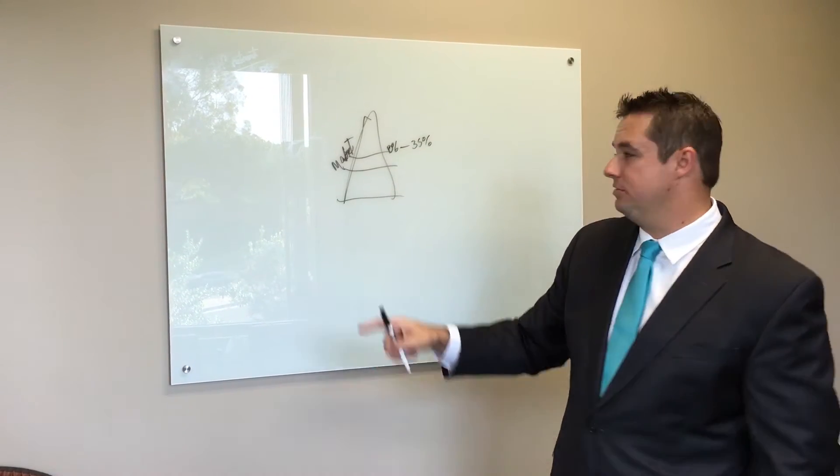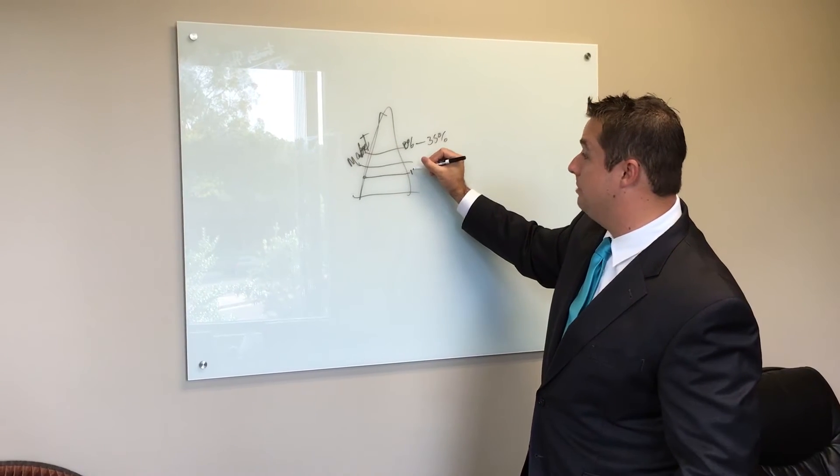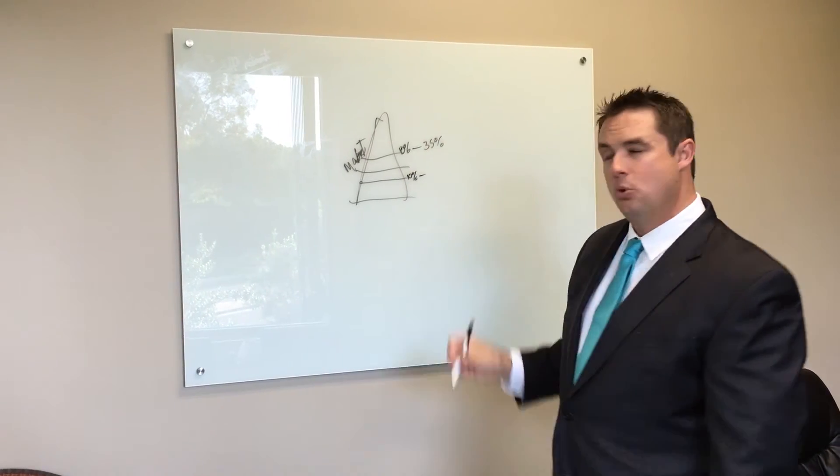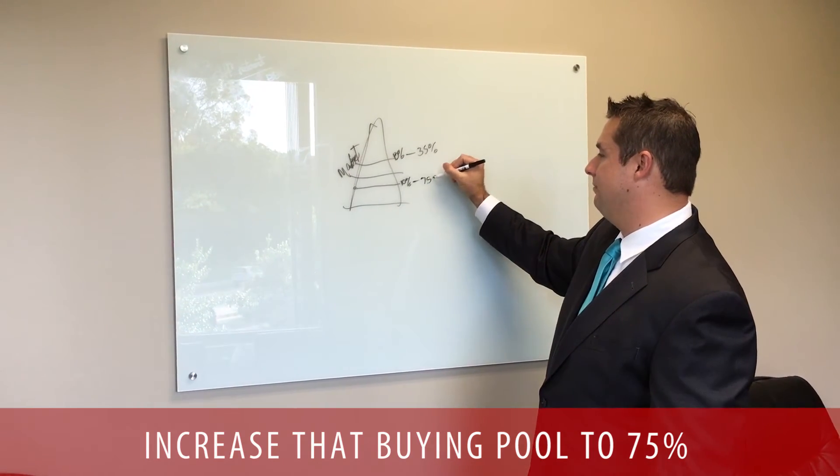Now what's interesting is if we price it at the market or just below the market, up to maybe 10% below the market, we're going to increase that buying pool to 75% of the buyers.